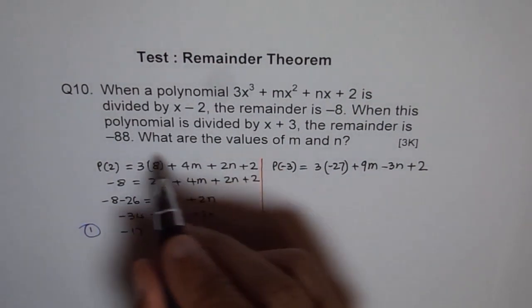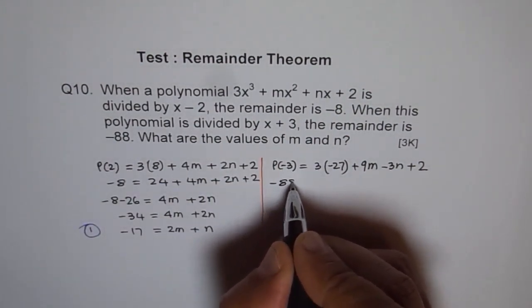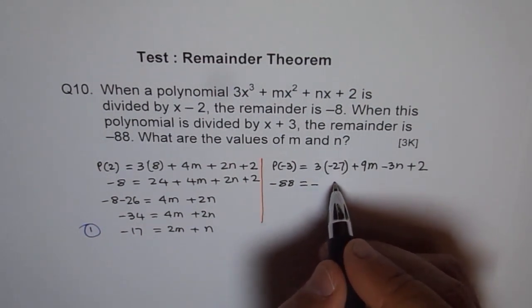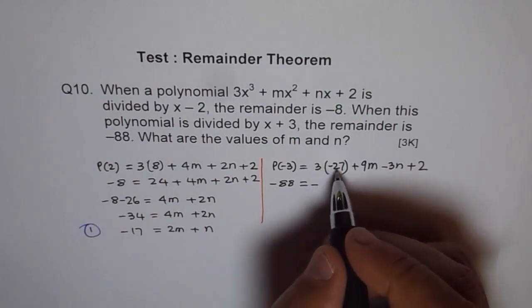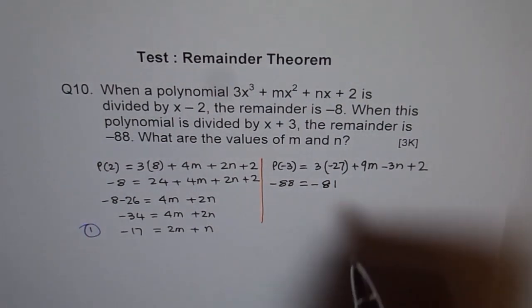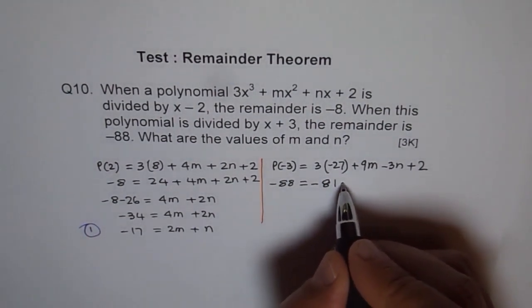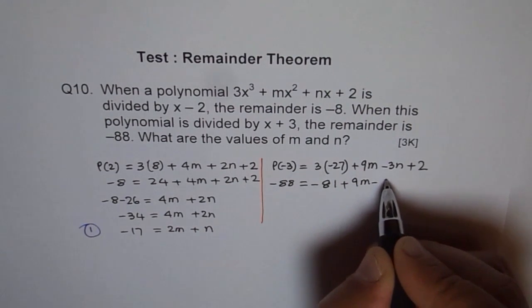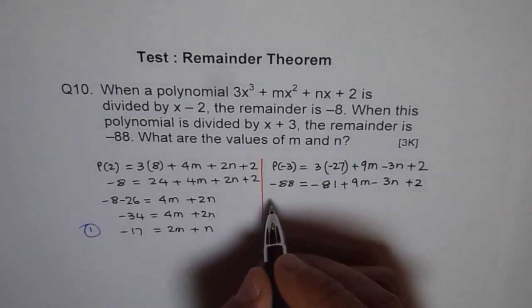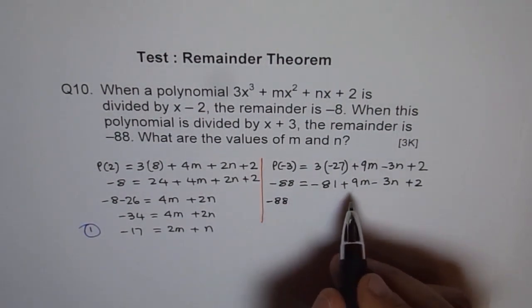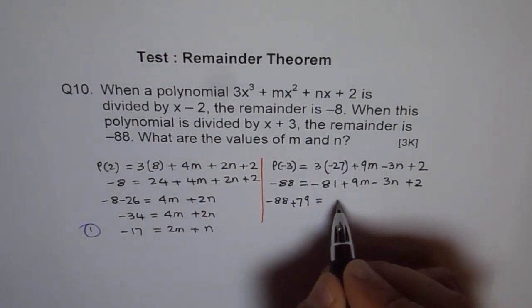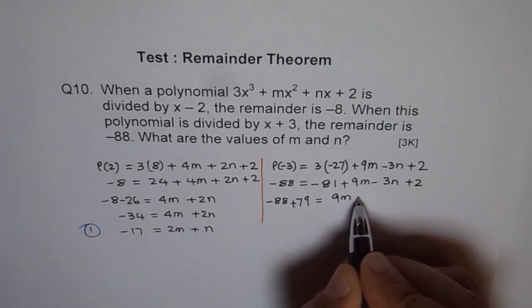Minus 3n plus 2. This p(-3) is -88. So we will put -88 here equals 3 times this, 3 times 27 is 81, and plus 9m - 3n plus 2. Now we will bring these terms on that side.